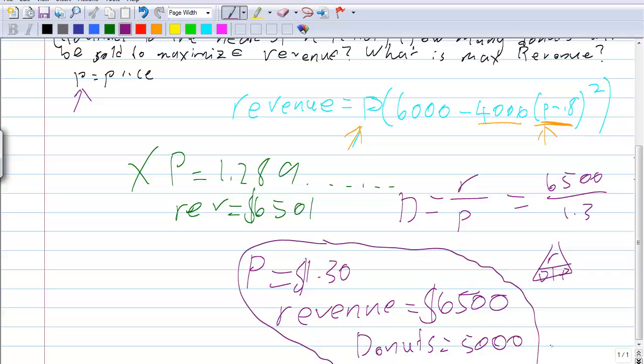Now however, if you had gotten say perhaps 5,000.5 donuts, you would again need to do some rounding because it's not possible to sell 0.5 of a donut. And then you would need to go back and fix these figures here. That concludes this lesson.